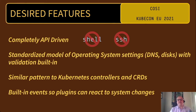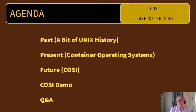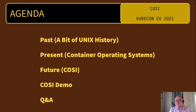Let's get to the agenda for the rest of the talk. First, we're going to venture into the past and talk about a little Unix history, which we hope will help you understand where Unix comes from. Then we'll venture into the present and talk about modern container operating systems, followed by a deeper dive into Cozy. After that, Andrew is going to show a demo of some of the cool things implemented so far in the reference implementation, and then we'll have a Q&A.